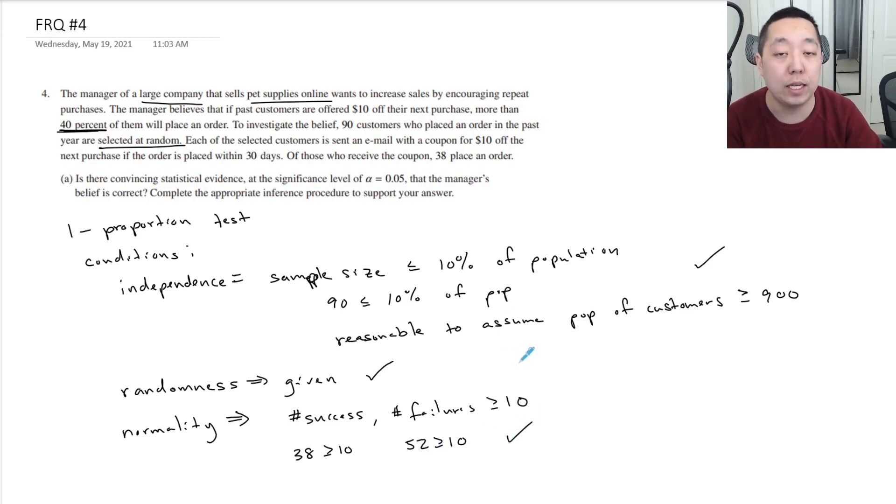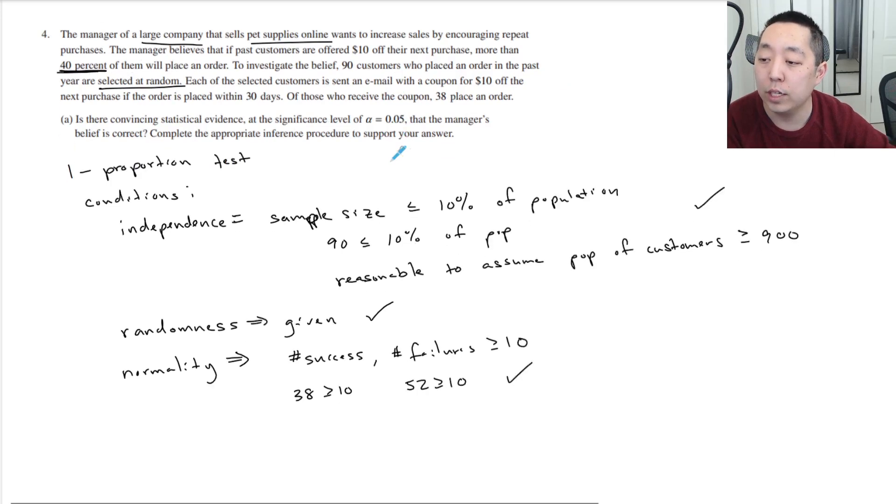So we're good on there. You can also do it as n times p, n times 1 minus p. You should get those same numbers because n times p is just the number of people who did redeem the coupon, and n times 1 minus p is the number of people who did not redeem that coupon. So the conditions are met.